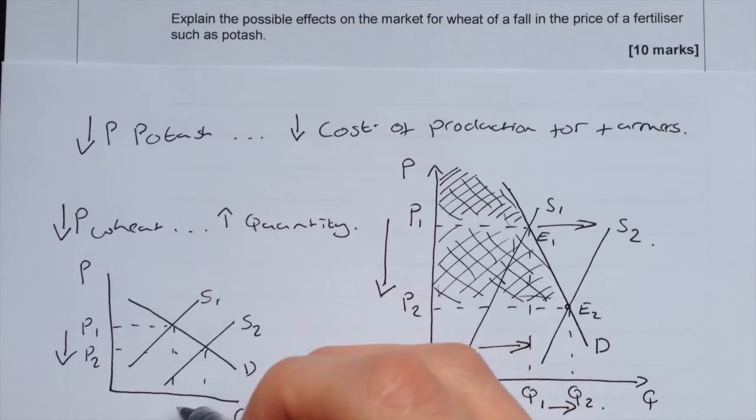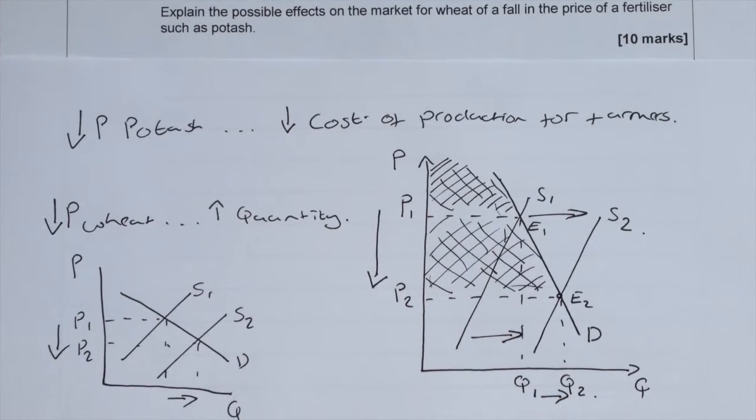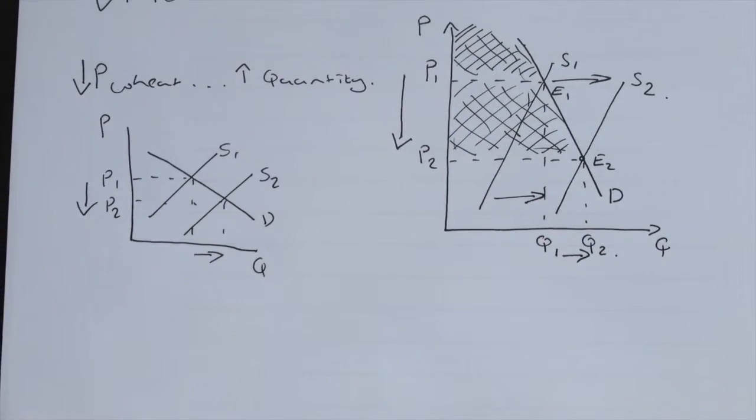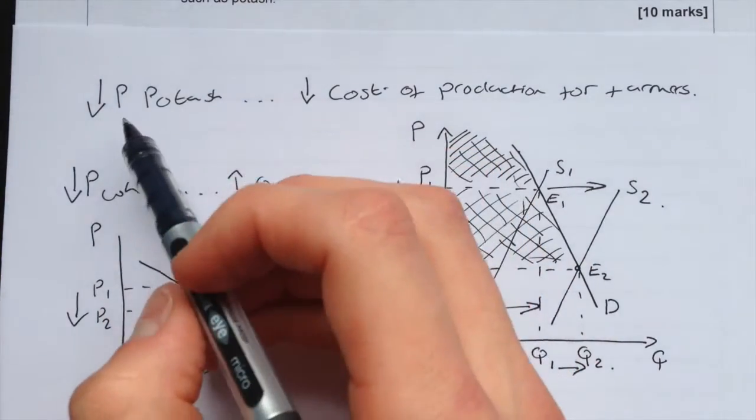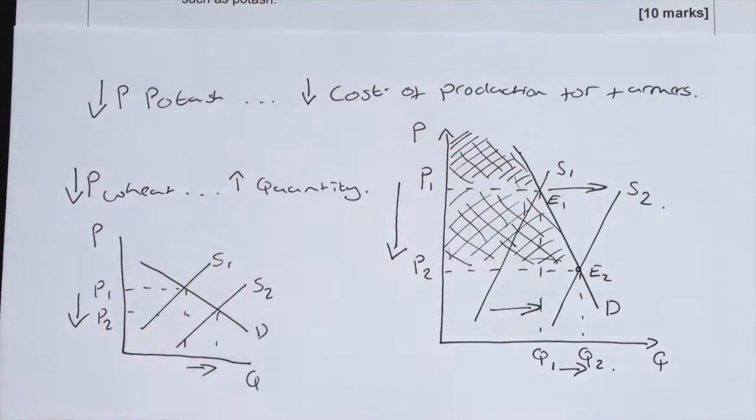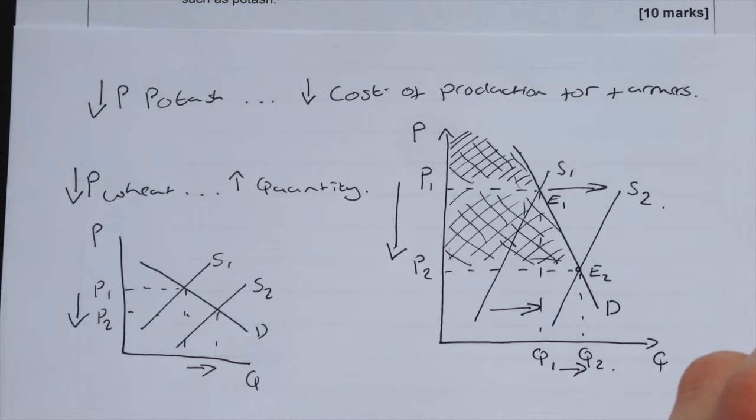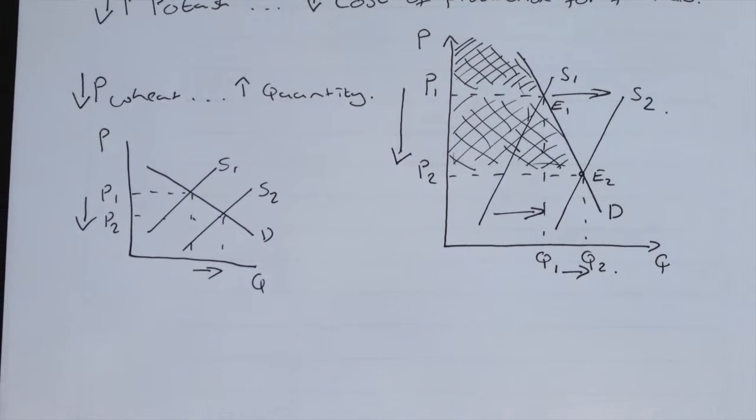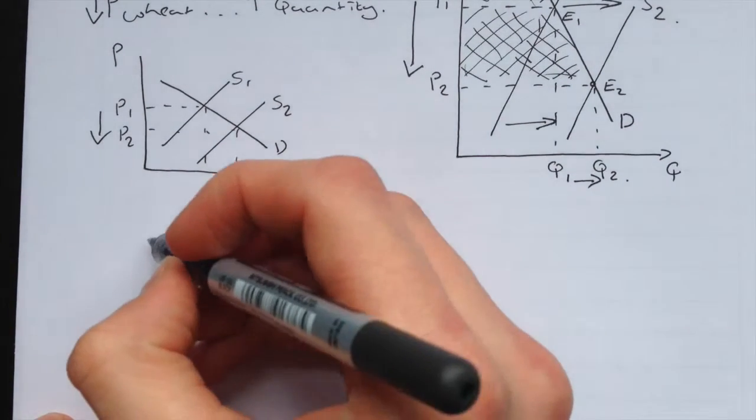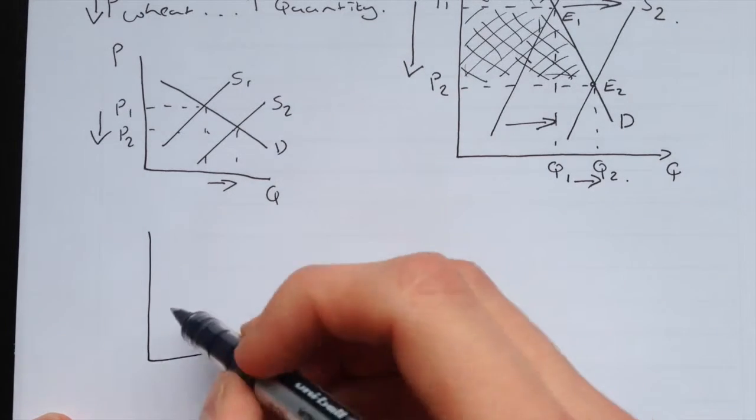Also, another thing that needs to be considered is how much the price of potash is in proportion to the cost of production for making wheat. If it only has a tiny percent of the farmer's cost of production, then the supply curve would actually only shift marginally across.